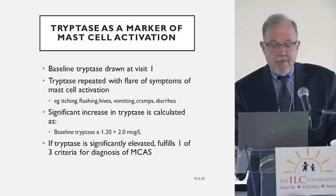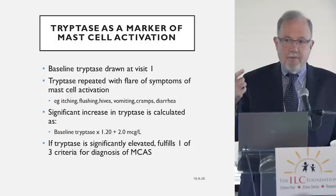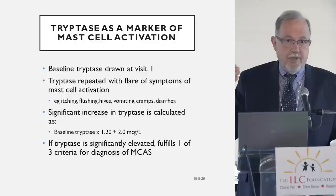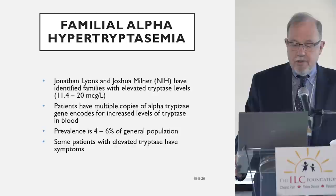A significant rise is defined as an increase of 20% over baseline plus 2. For example, if the upper range of normal is 11.4 and somebody starts at 4.0, then 4 plus 20% is 4.8, plus another 2 is 6.8. That's still within the reference range since the upper limit is 11.4, but it's still considered a significant increase when somebody is highly symptomatic. That's the tool we're left with now since the Ministry of Health stopped funding all the other tests, but it is a very reliable test.